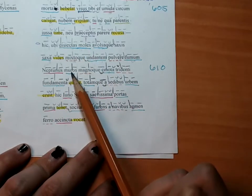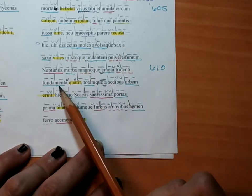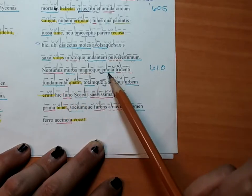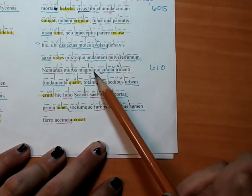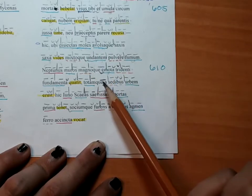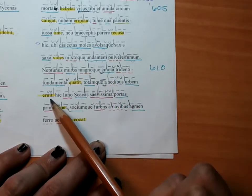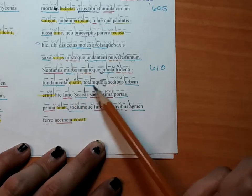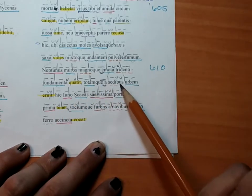Neptune shakes the walls and the foundations, having been moved by his great trident. And he destroys the entire city from its seats.